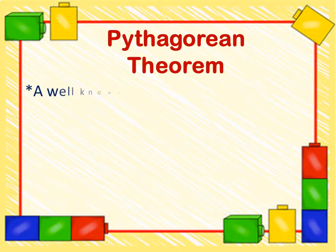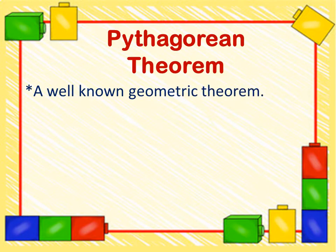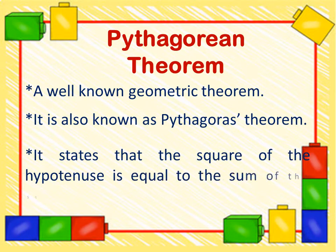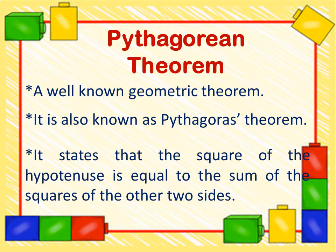Pythagorean Theorem - a well-known geometric theorem, also known as Pythagoras theorem. It states that the square of the hypotenuse is equal to the sum of the squares of the other two sides. Let's see the illustration of this theorem.